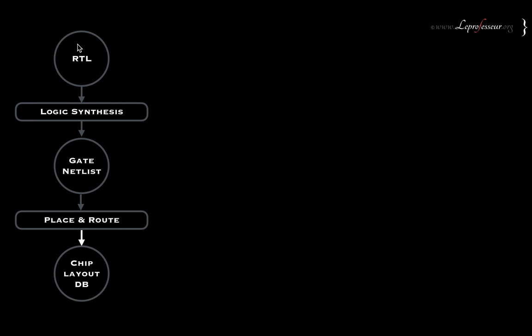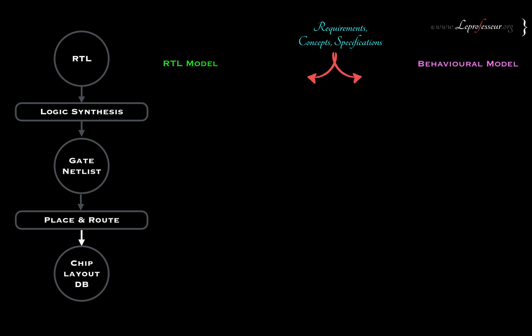What we're going to discuss is the RTL. Starting from the requirement specification or design concept, you come up with a design idea. You may write an RTL code or develop an RTL model for your design idea. At the same time, you may want to write a behavioral model for the same design. In practice, design teams write an RTL model, and from the same specification, verification engineers develop a verification model.